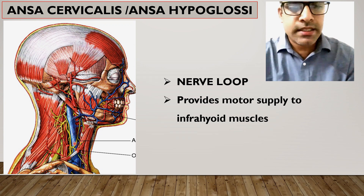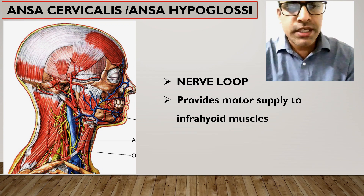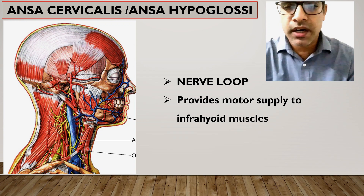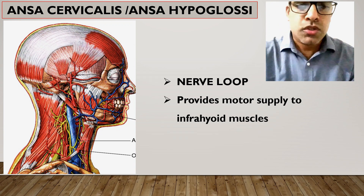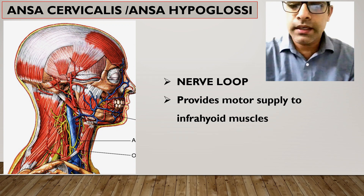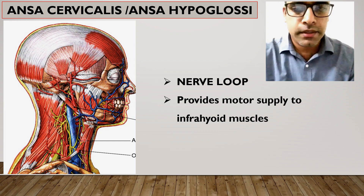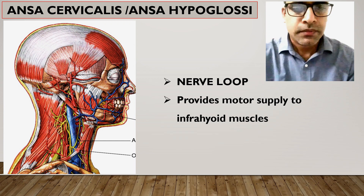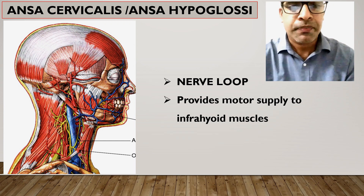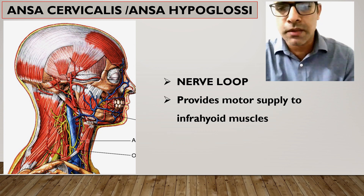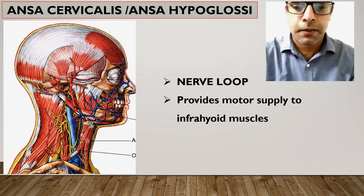The branches from this ansa hypoglossae, or ansa cervicalis, provide motor supply to the infrahyoid muscles. These muscles include the sternohyoid, sternothyroid, thyrohyoid, and both bellies of the omohyoid — the superior belly and inferior belly. All these muscles receive their motor supply from the ansa cervicalis.